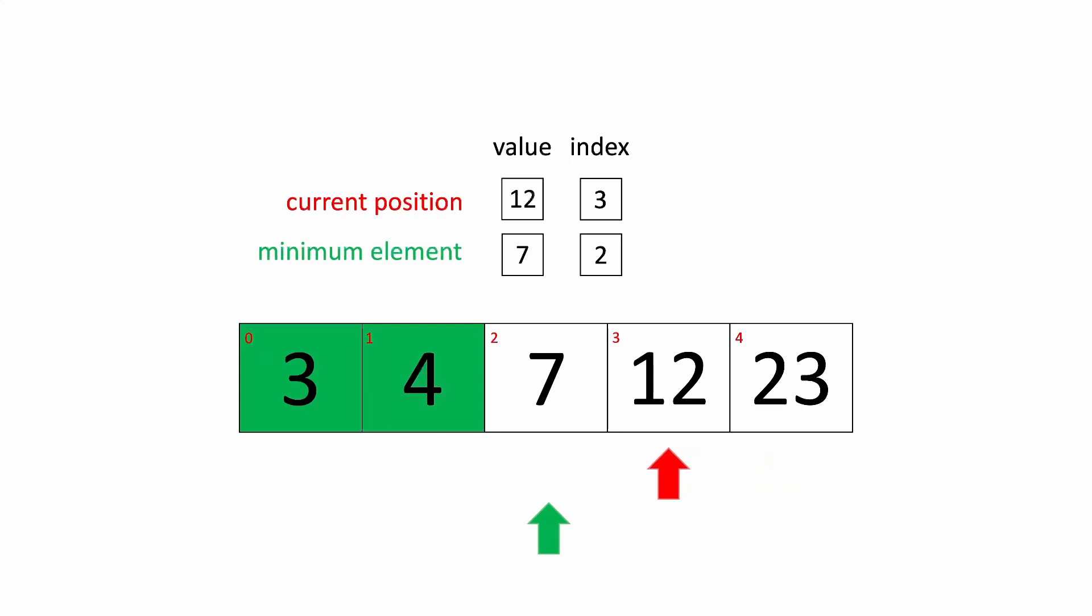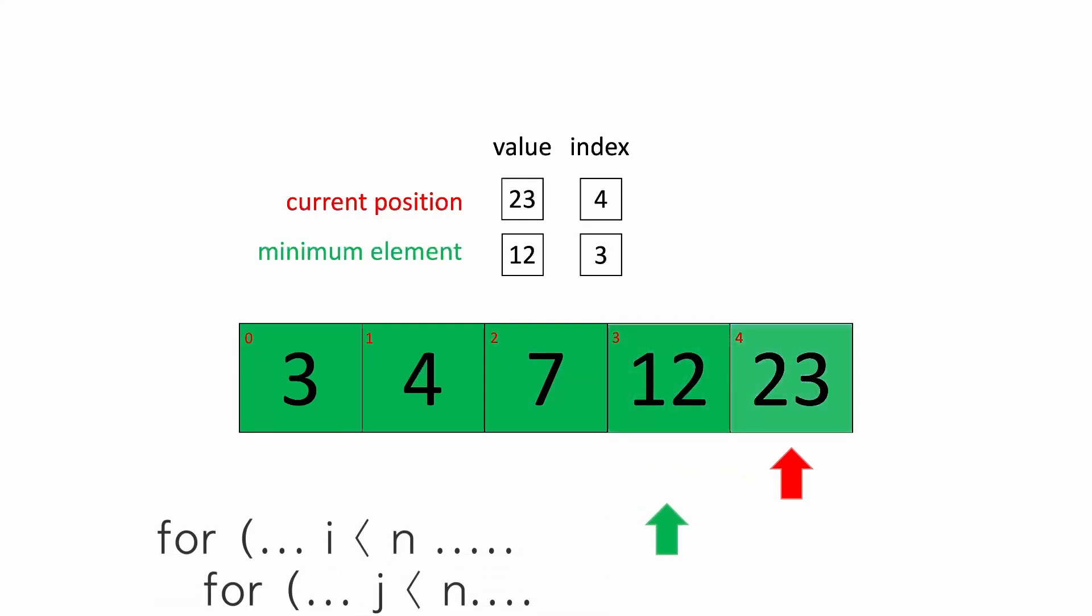And we're going to do this three more times until the array is sorted. Because of the way selection sort works, it is also a time complexity of n squared. You're going to end up having two for loops whenever you code this to make this work.